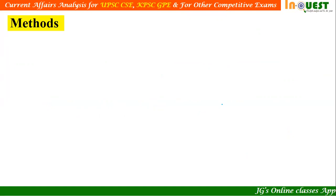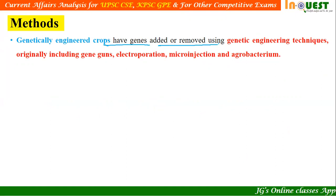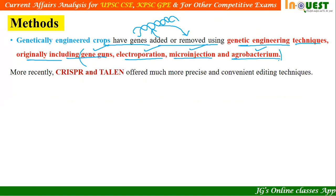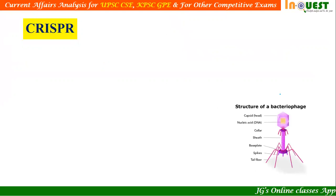Genetically engineered crops have genes added or removed using genetic engineering techniques. Originally, this included conventional methods such as gene guns, electroporation, microinjection, and Agrobacterium. As mentioned, we can either add a gene or remove a gene from the DNA — such modification is called genetic engineering. Now we have two latest technologies: CRISPR and TALEN, which offer much more precision and convenient editing techniques.